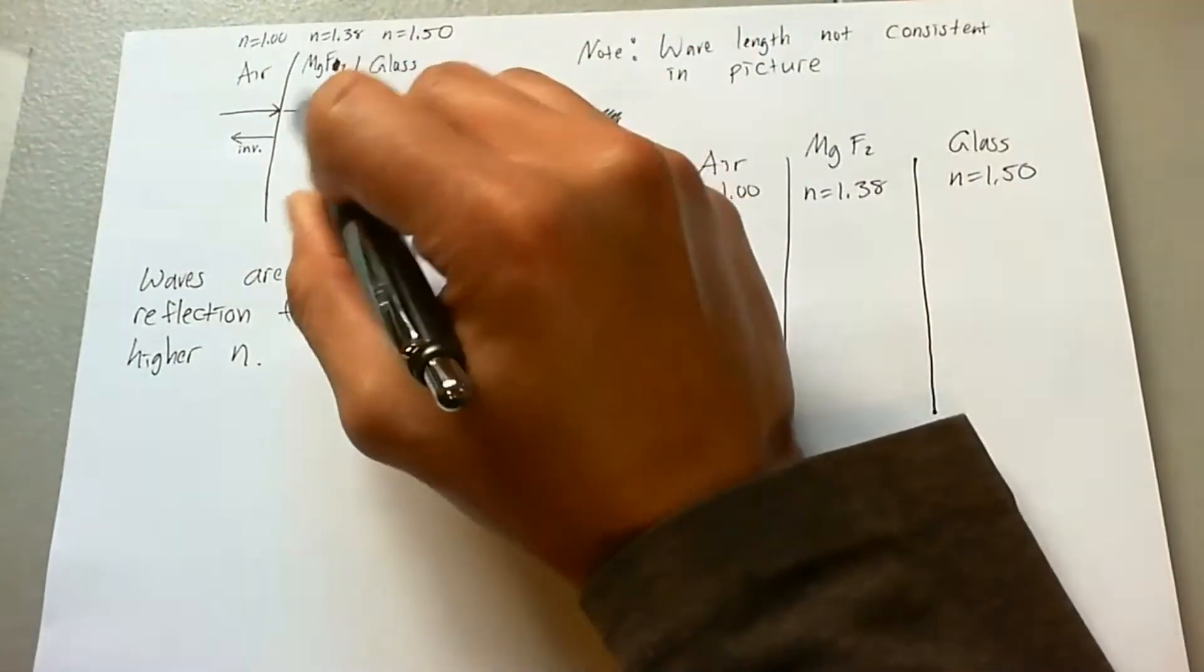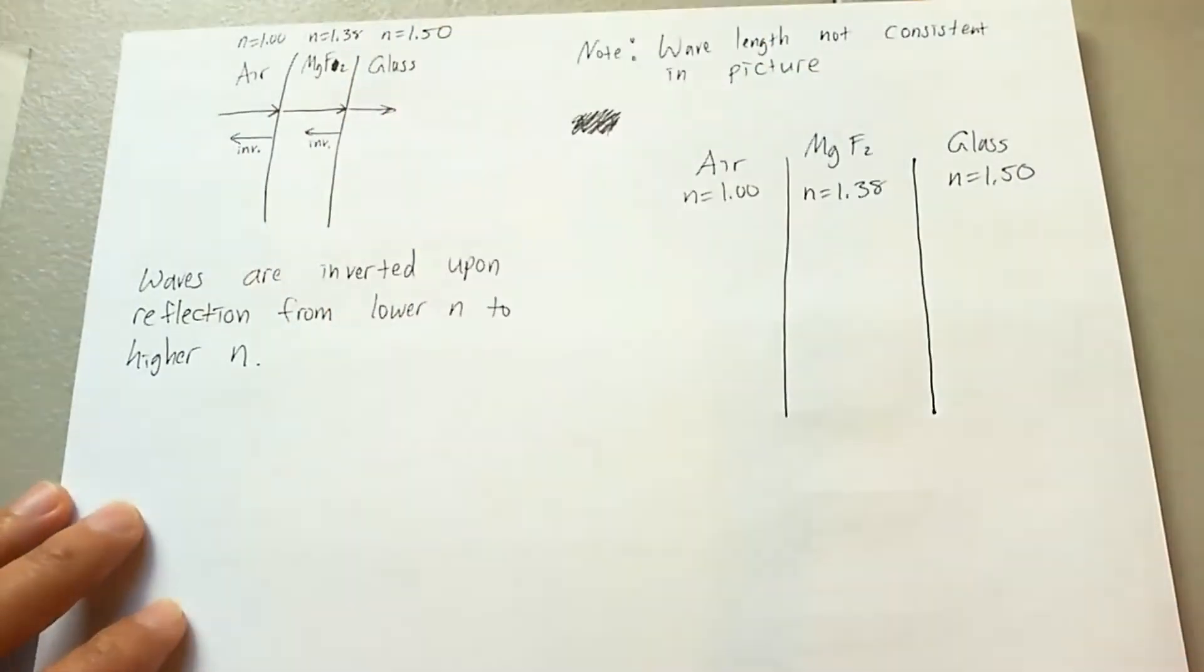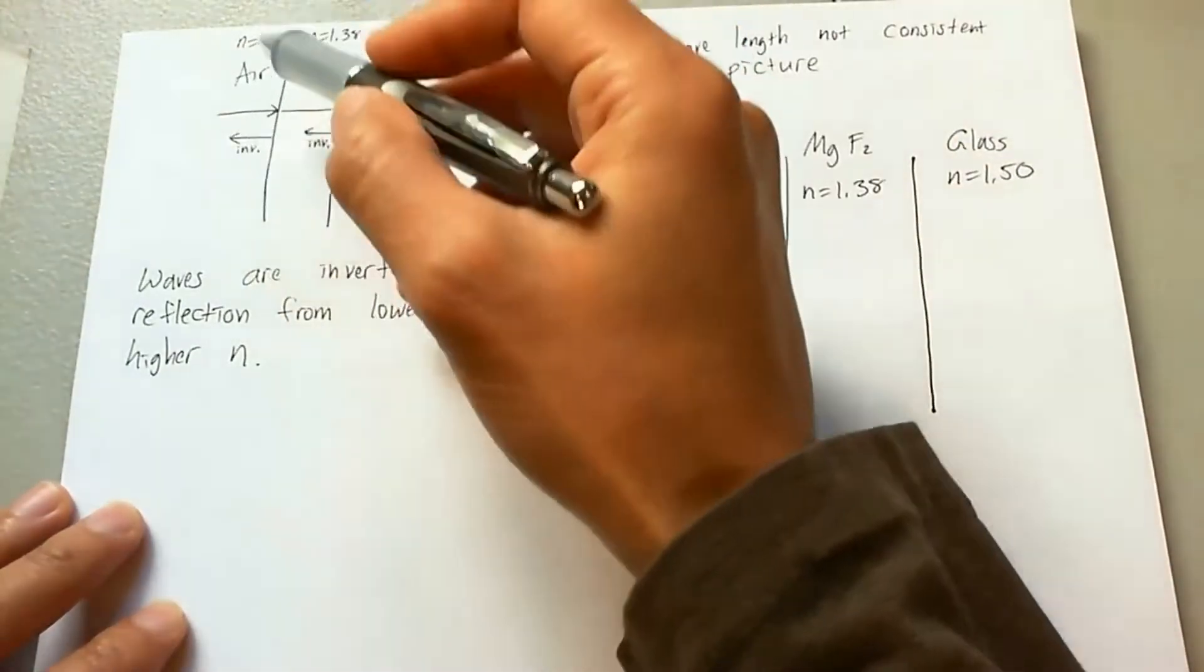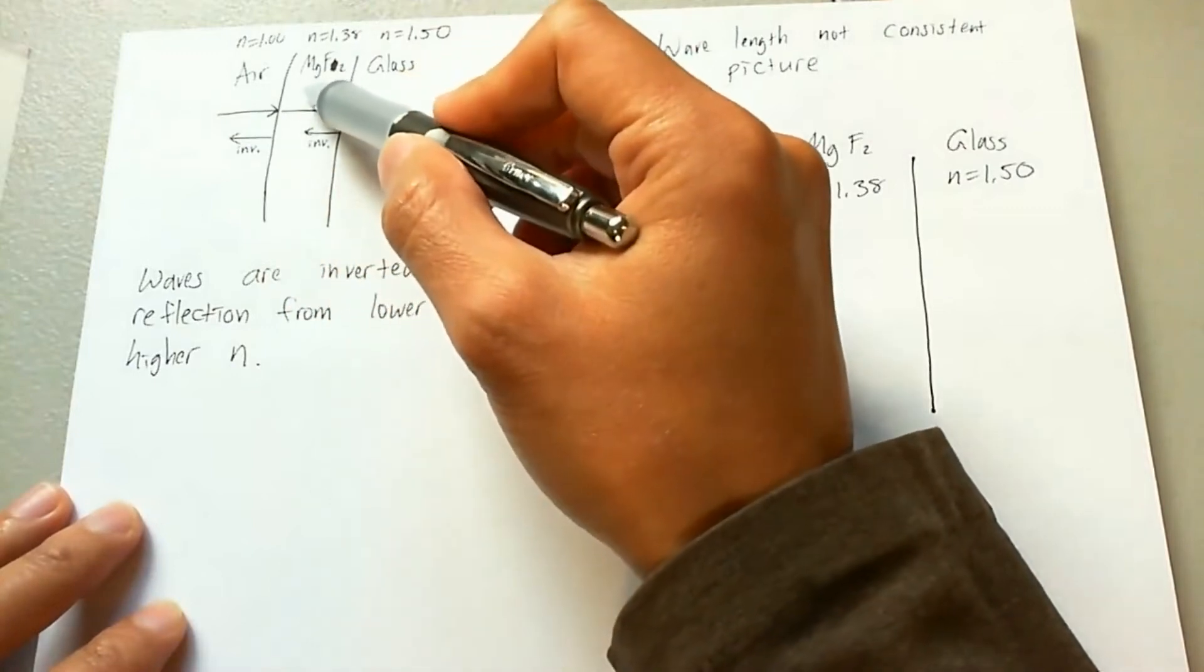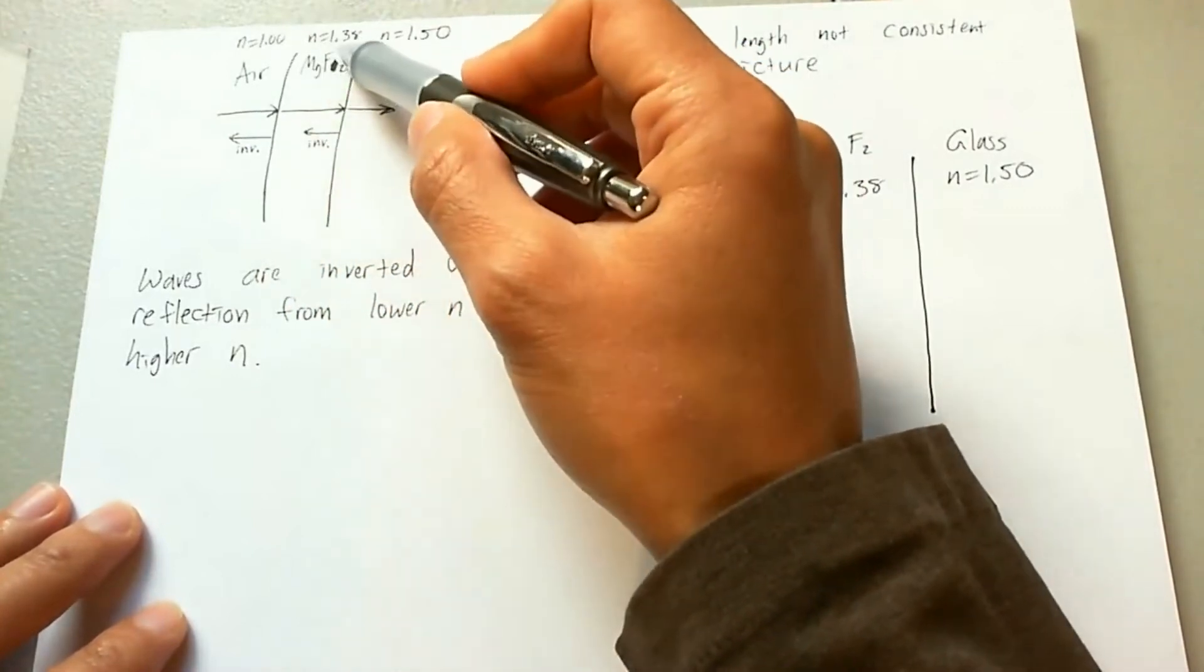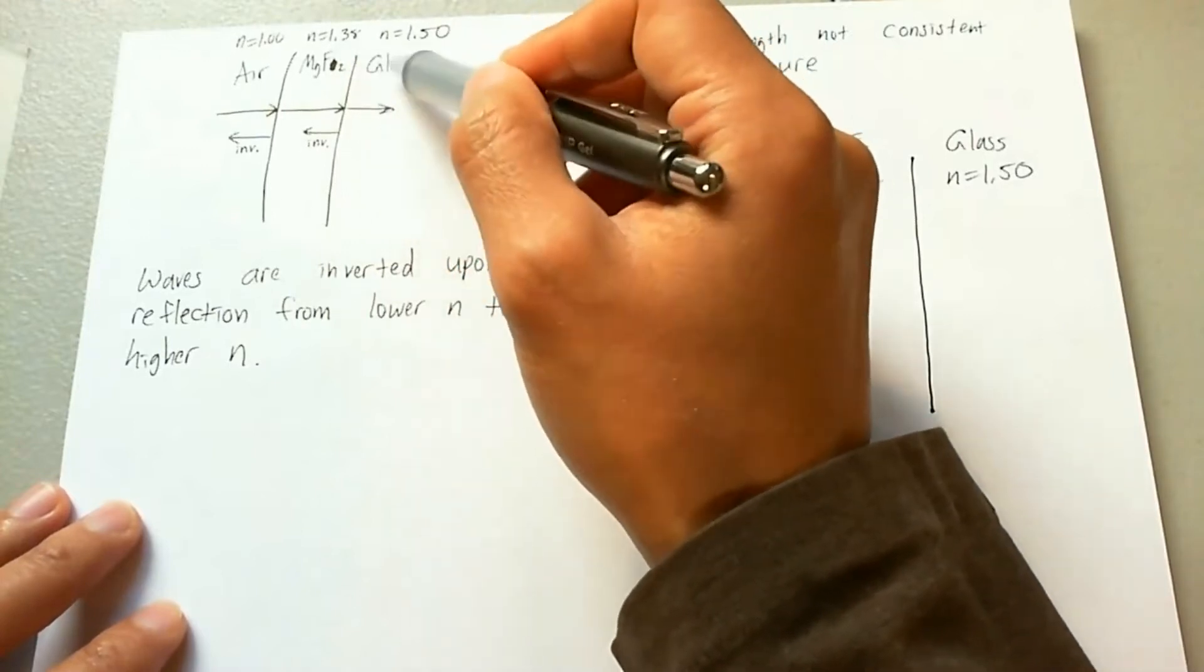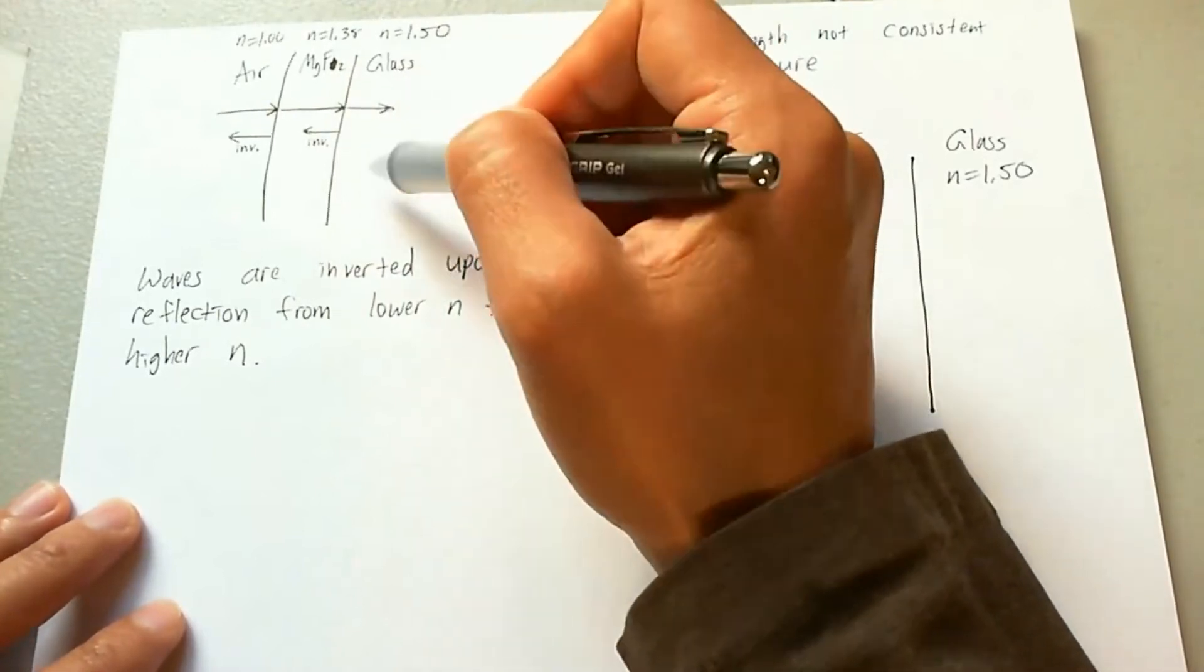Each one of those are higher than the previous. So if you have air at one, you got that magnesium fluoride film, which has an N of 1.38, and then you have glass of 1.5 index of refraction.